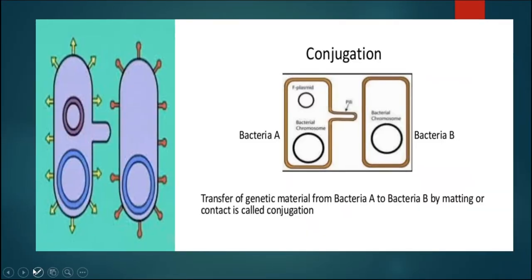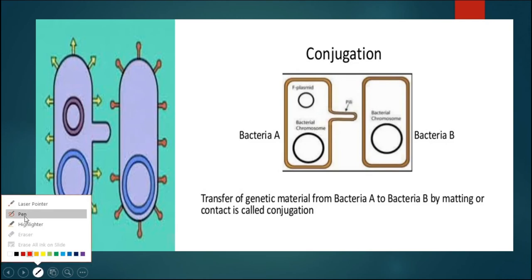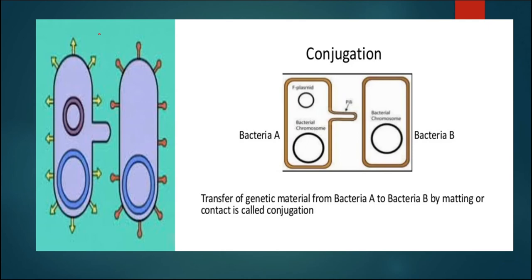This figure shows the conjugation process in bacteria. Conjugation is a special type of sexual reproduction in which two bacteria — one as donor and one as recipient — come closer. The pili attach and the wall between the two adjacent cells dissolves, making a passage. Some part of the chromosome from bacterium A is transferred to bacterium B. This transfer of genetic material is known as conjugation.